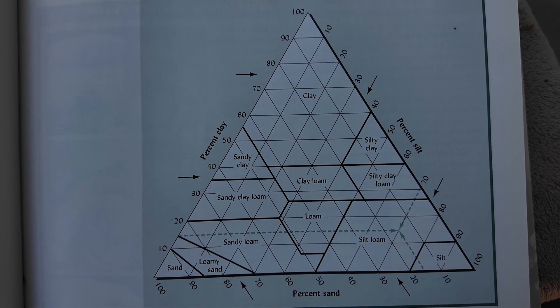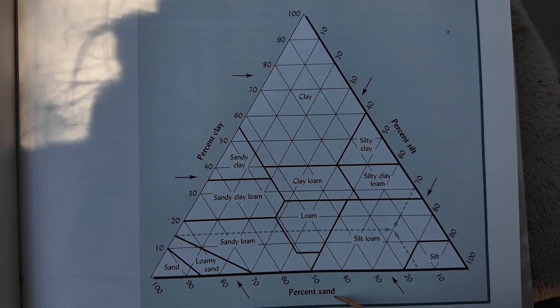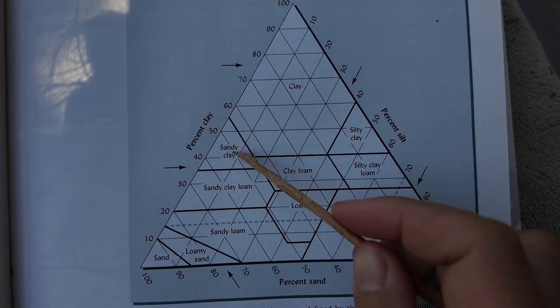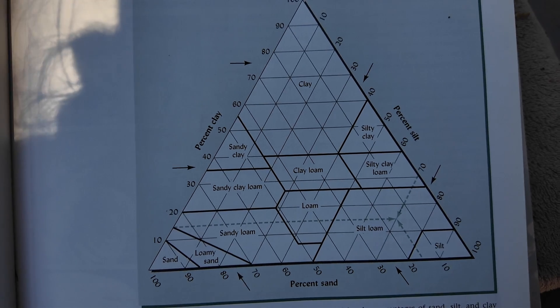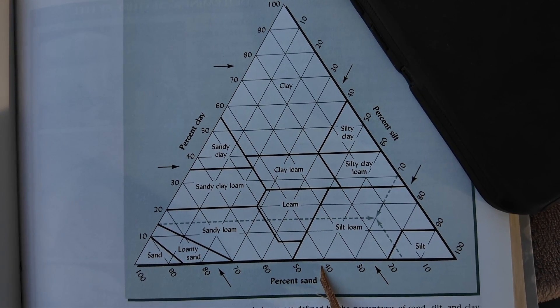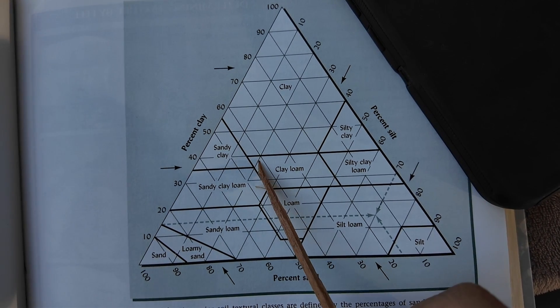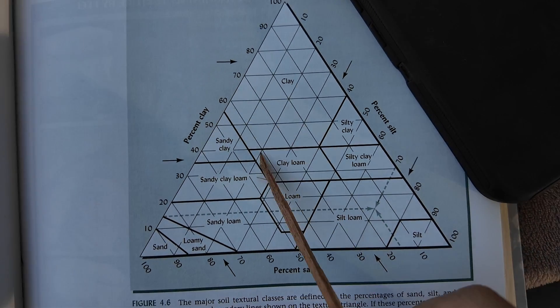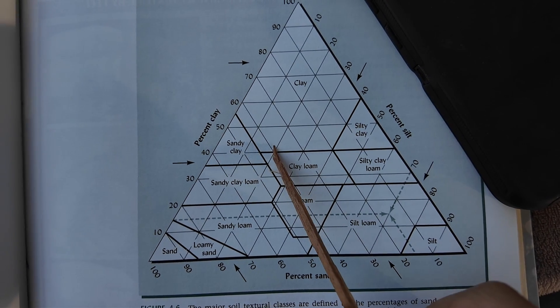This here is a soil texture triangle. If you know what percent sand, silt, and clay you have in your soil you can figure out what class of soil you have. Let's say you have a sample that's 40% sand and 20% silt. You come up here and then you find the 20% that would also make it a 40% clay. So that gives you kind of a clay loam or a clay soil.